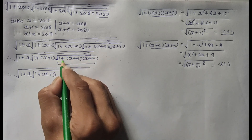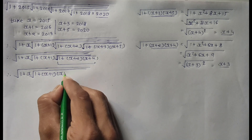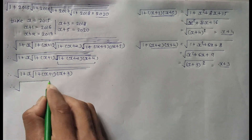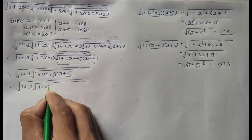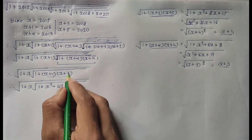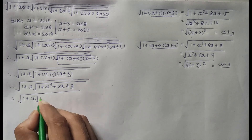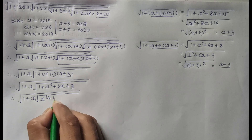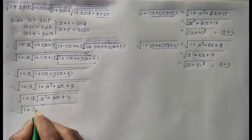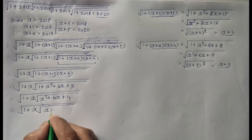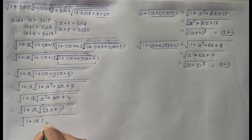Inside square root of 1 plus (x+2)(x+4) equals x plus 3, so put and multiply x plus 3. Now, inside square root of 1 plus x times (x+2), we get x squared plus 4x plus 3 plus 1, giving inside square root of 1 plus x, which simplifies to square root of (x+2) squared, equal to x plus 2.